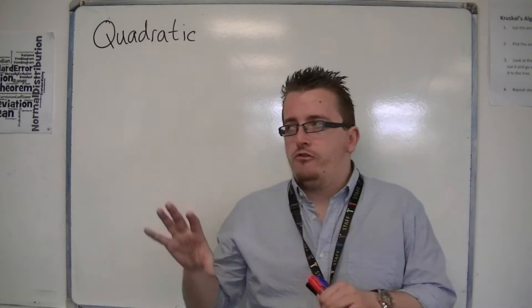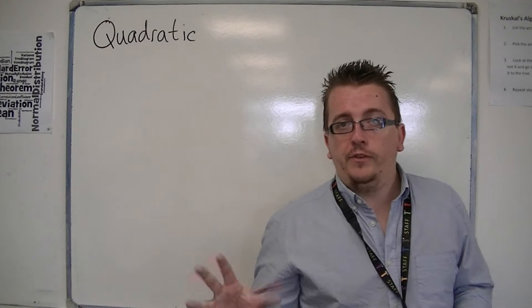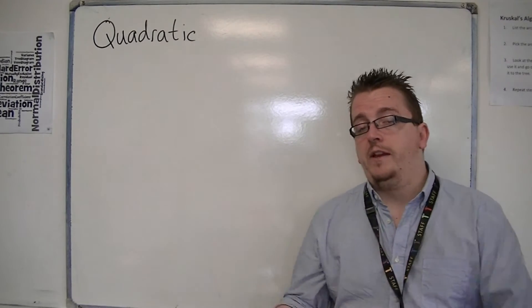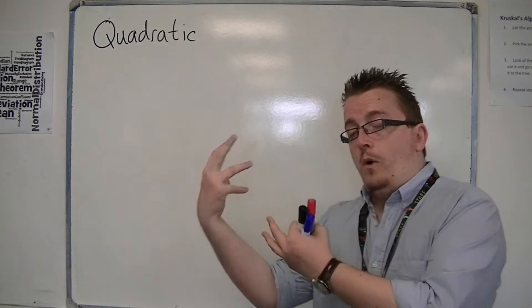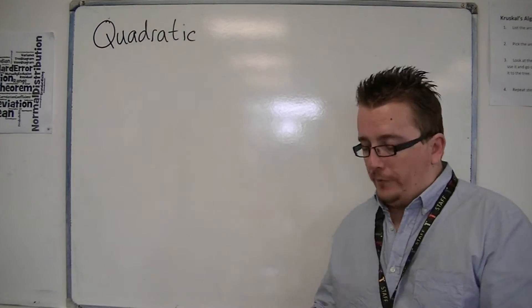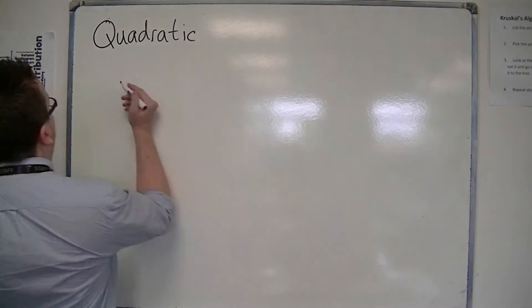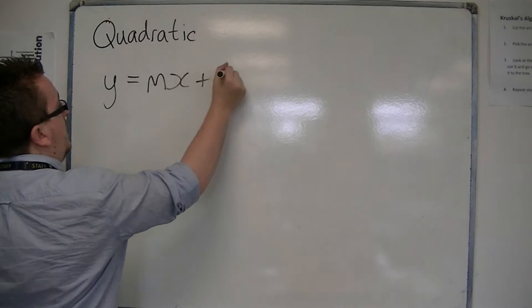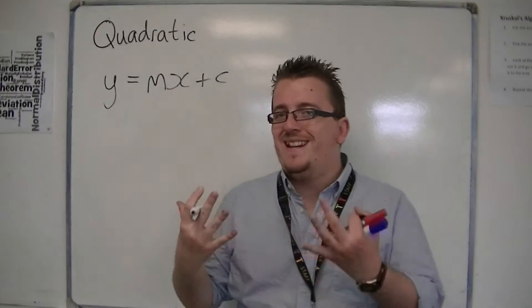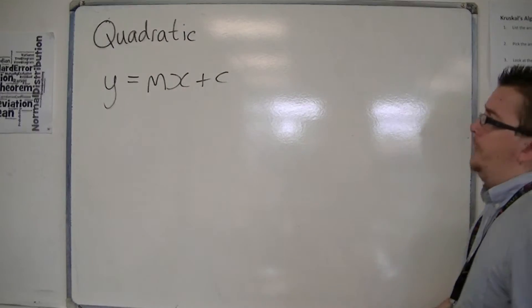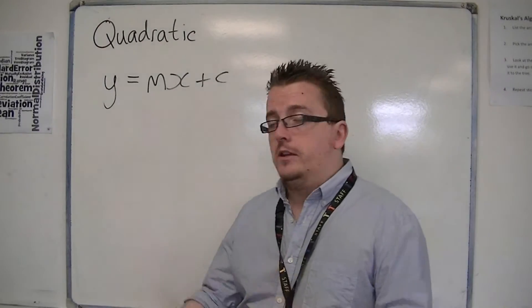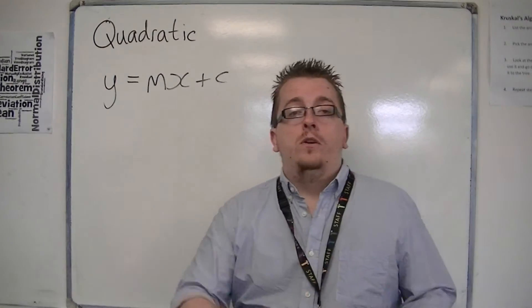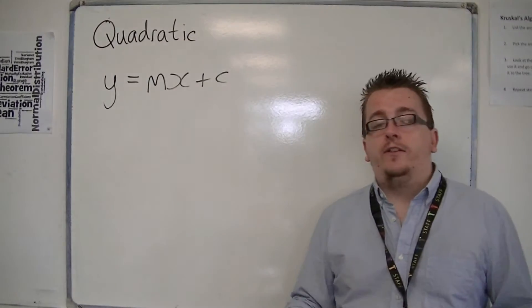We've moved from linear graphs — so straight line graphs — now to quadratics. When I introduced linear graphs, what we were looking at was anything of the form y equals mx plus c. That's what we meant by linear. The linear graph, being a straight line, has a gradient, and the c tells you where it intersects the y-axis.